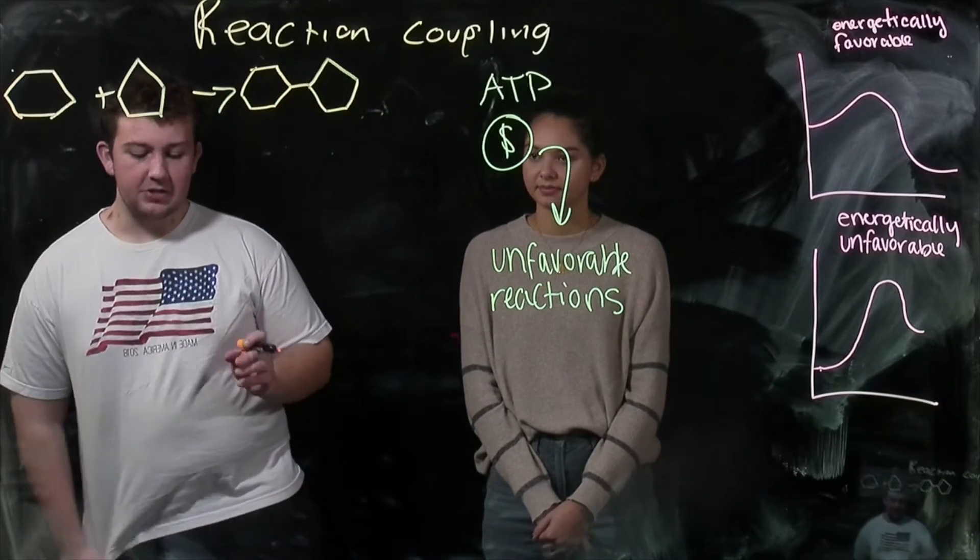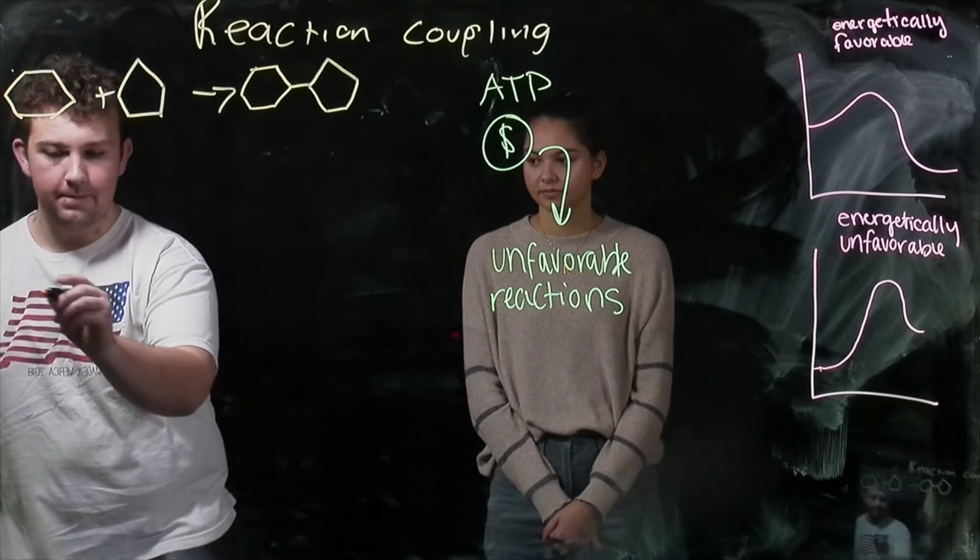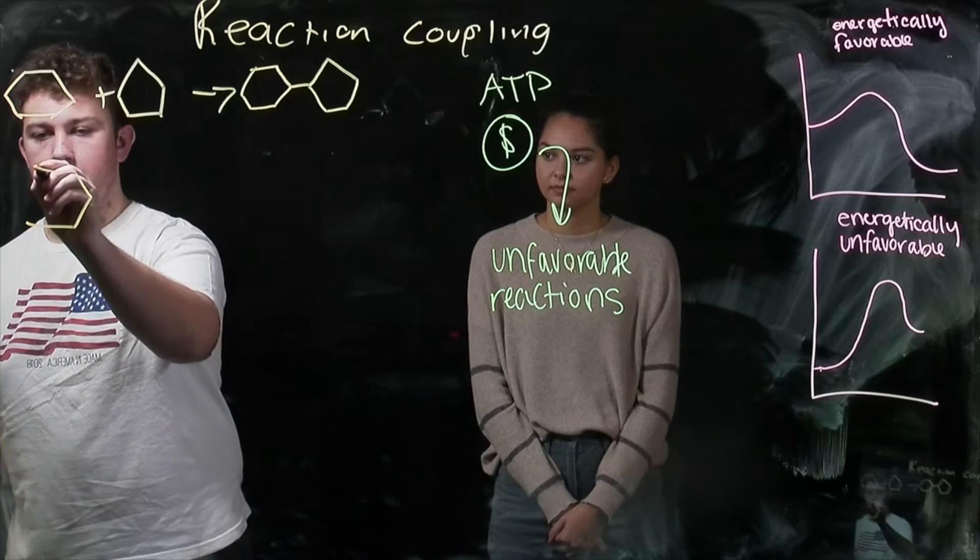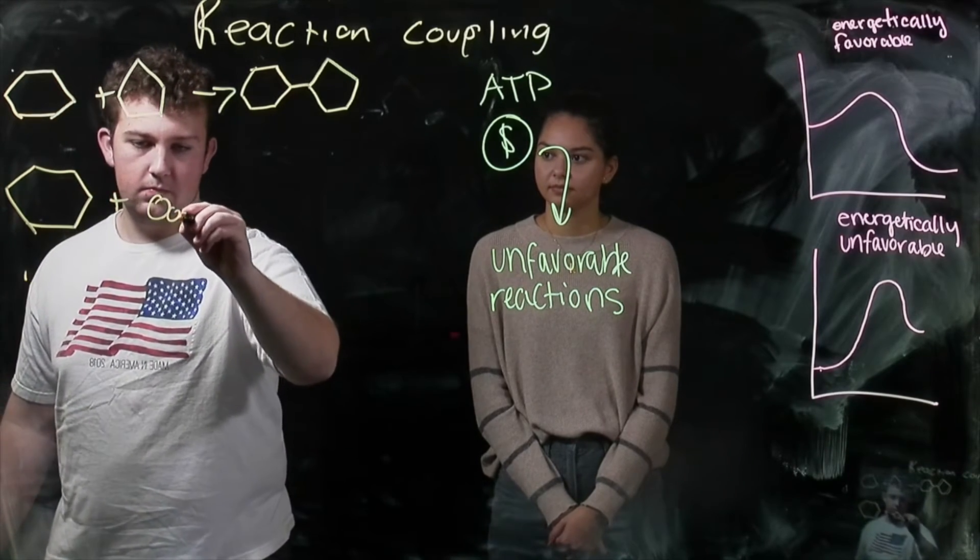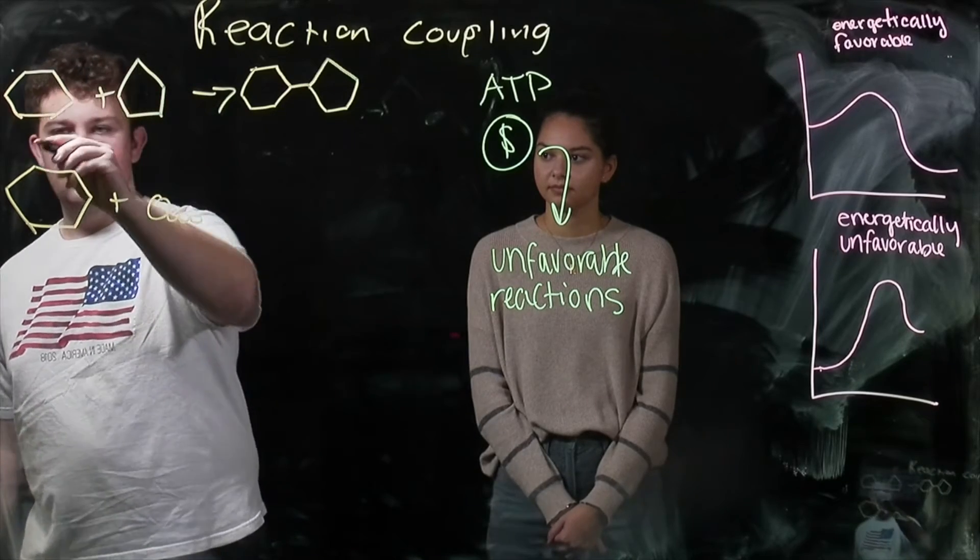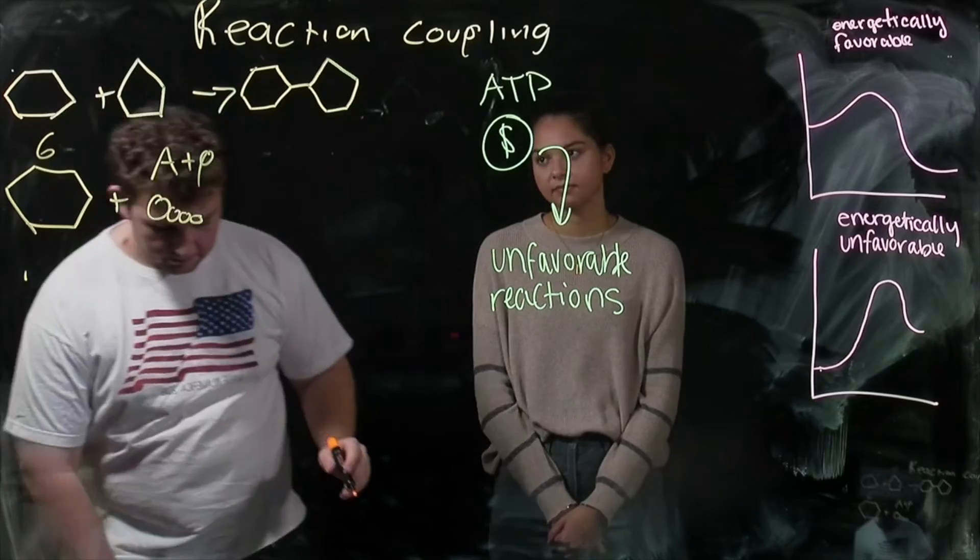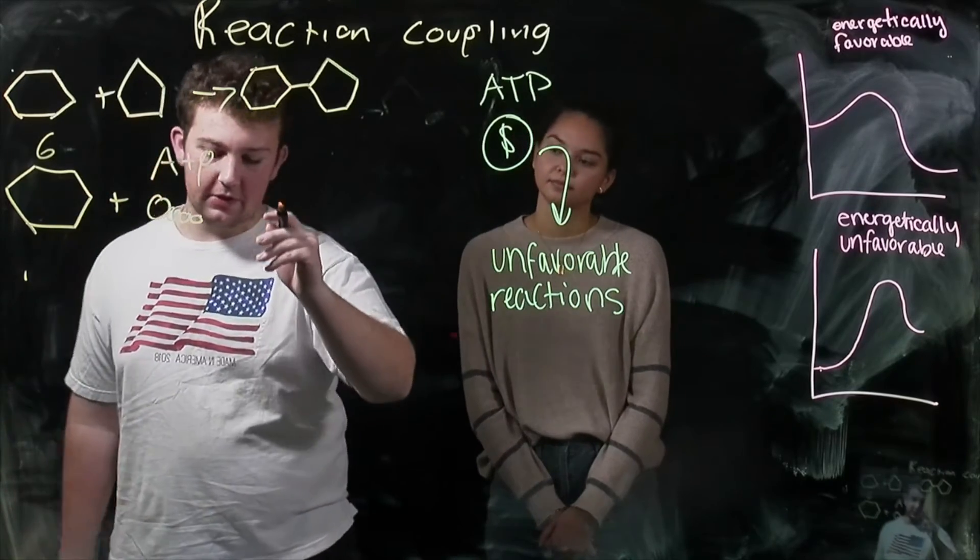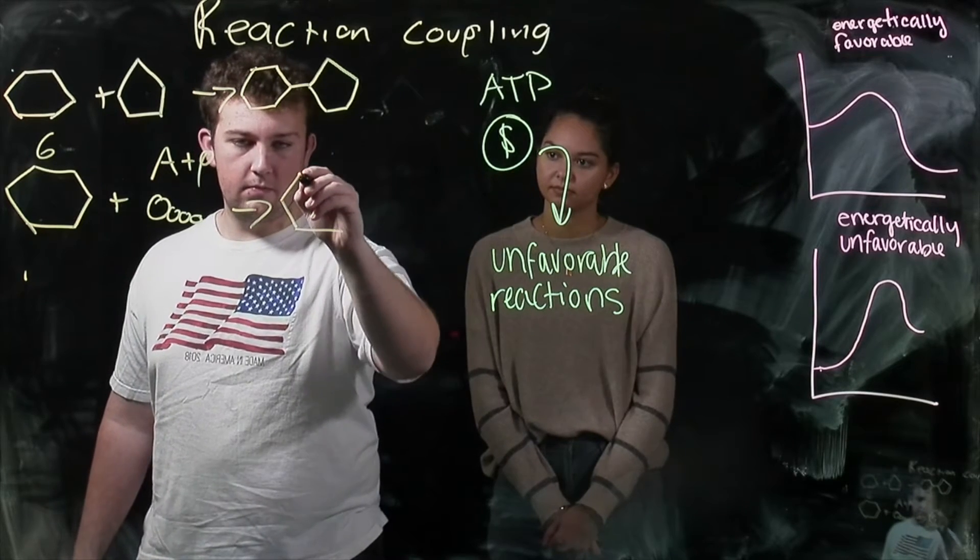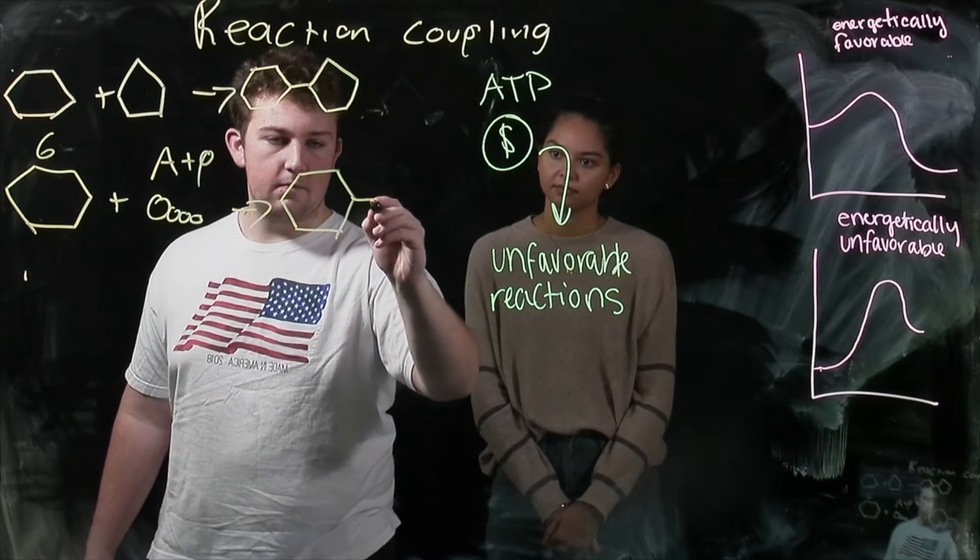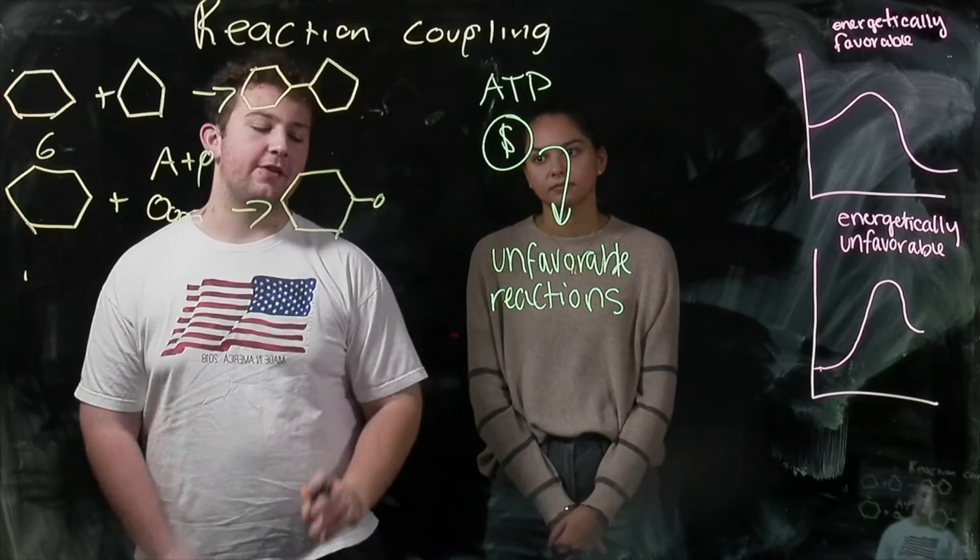So here's a very energetically favorable reaction, which is reacting glucose with ATP to make glucose P, which is glucose with an extra phosphate group, and ADP, which is the de-energized form of ATP.